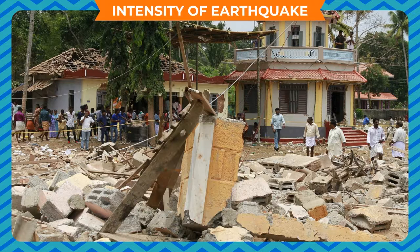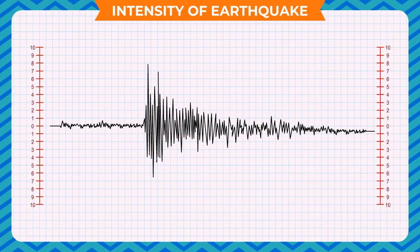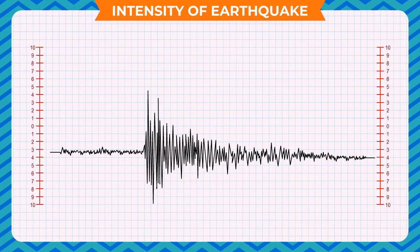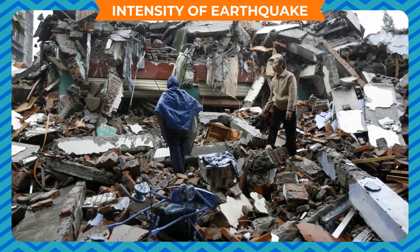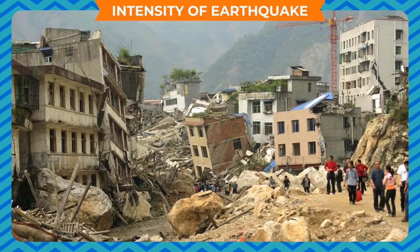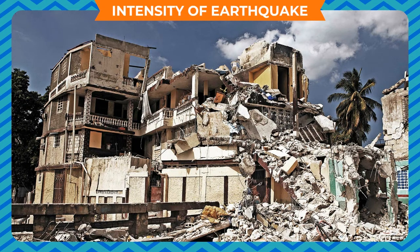Intensity of earthquake: The magnitude of an earthquake is a measure of the amplitude of the seismic waves, expressed by the Richter scale. The number indicating the magnitude on the Richter scale ranges between 0 to 9. An earthquake of magnitude 4.5 is considered moderate and can disturb loose objects. At magnitude 6.5, an earthquake can damage weak structures. An earthquake of magnitude 8 or more can be very disastrous and can destroy entire cities. Both the Bhuj and Kashmir earthquakes had a magnitude greater than 7.5. The intensity of an earthquake is also expressed by the modified Mercalli scale, which shows how strong a shock was felt at a particular location.